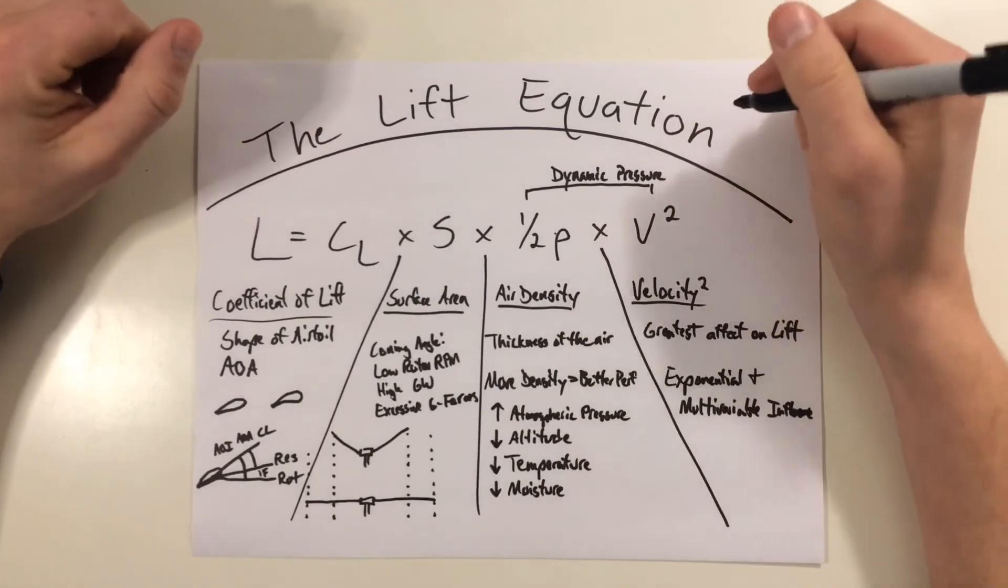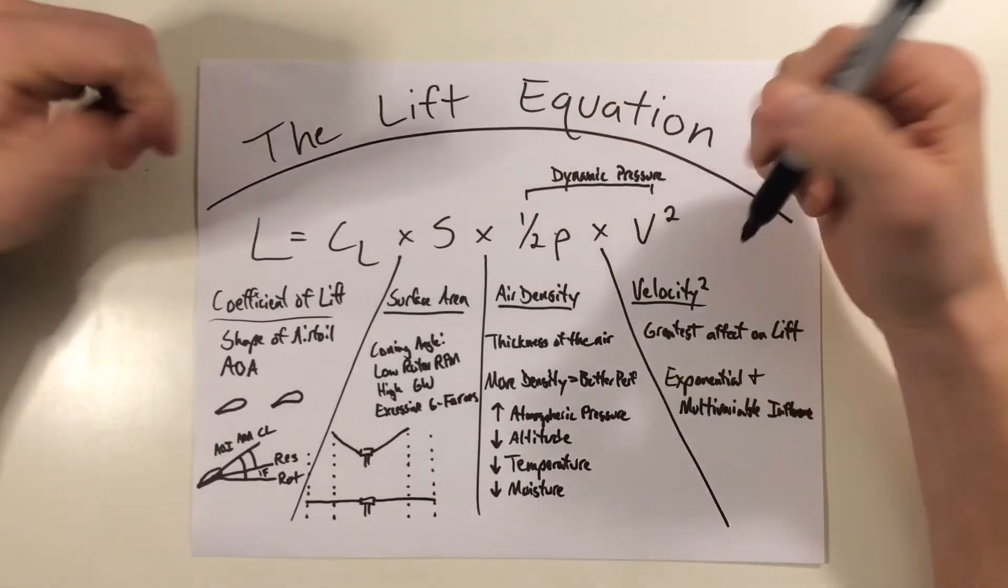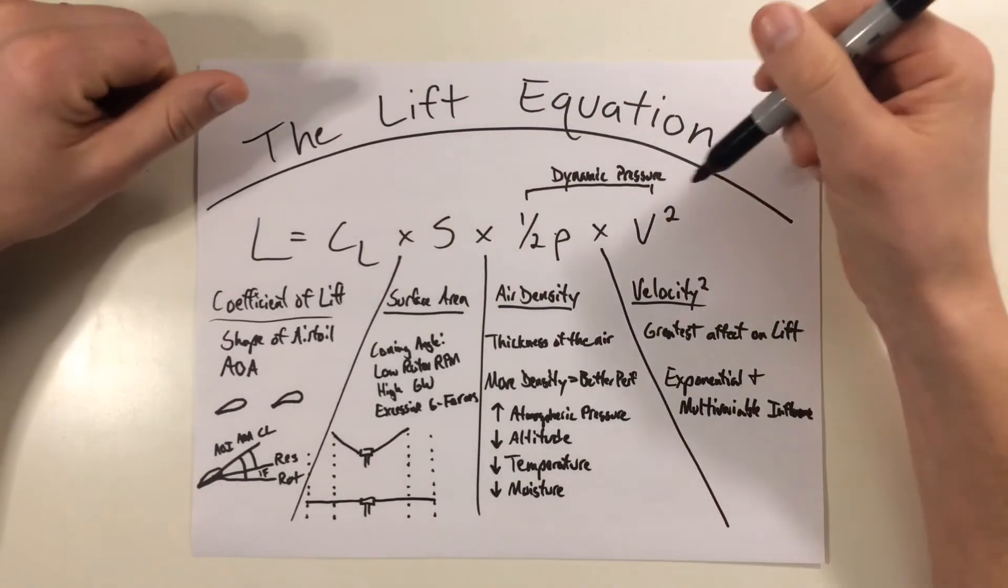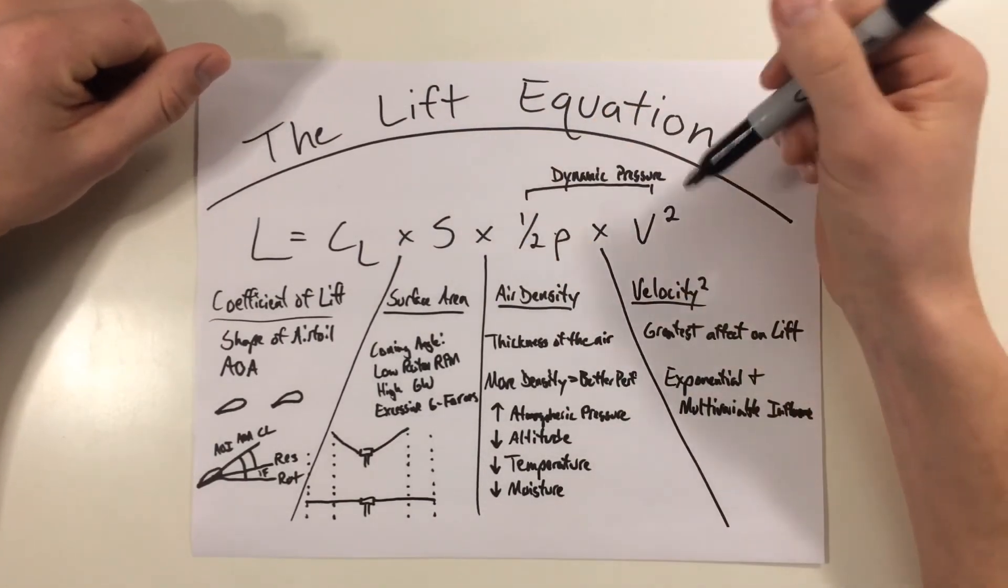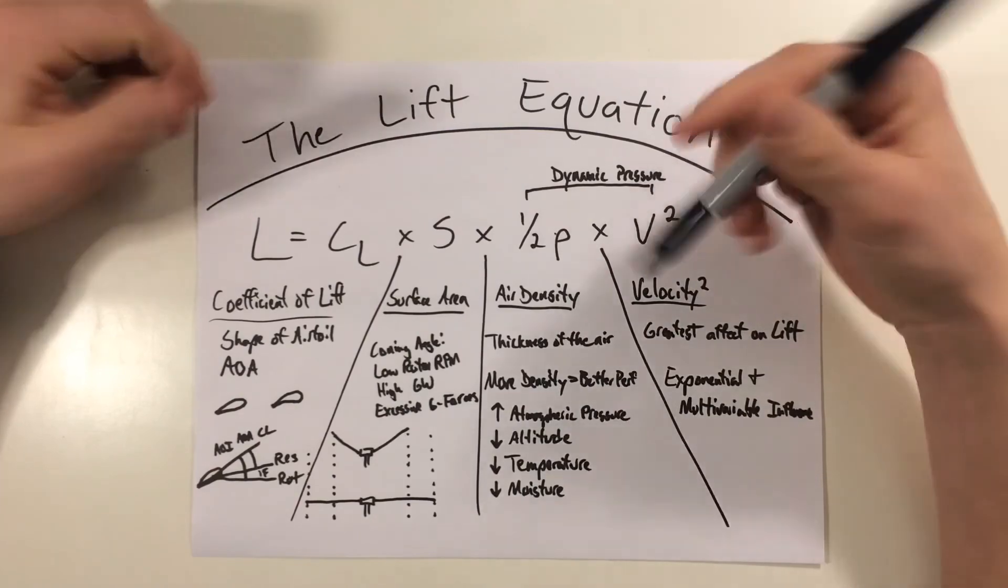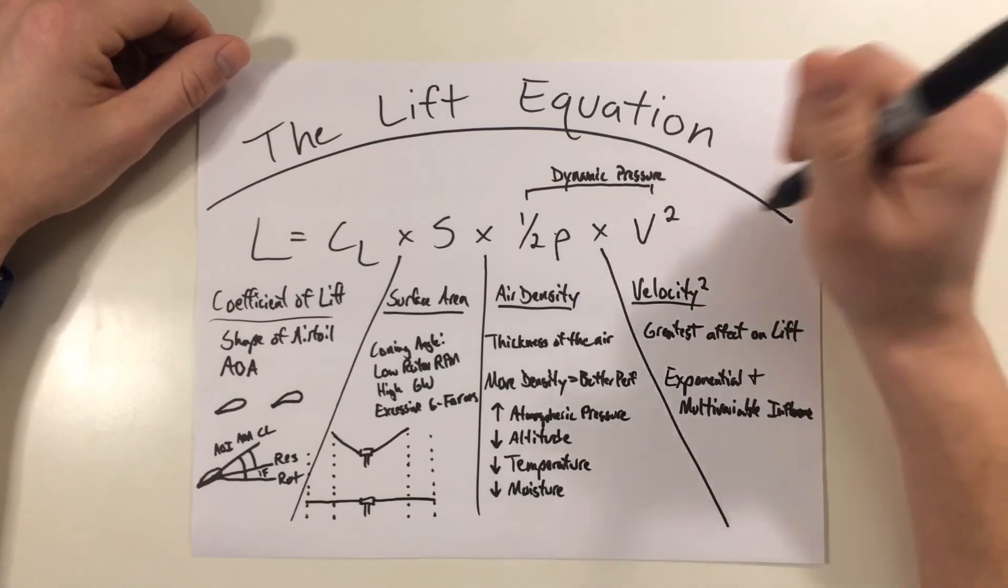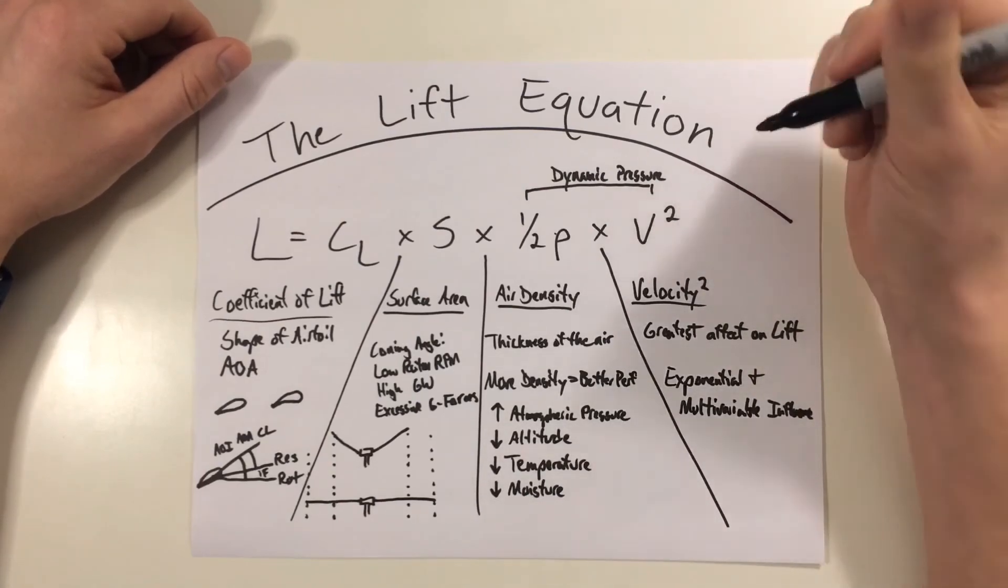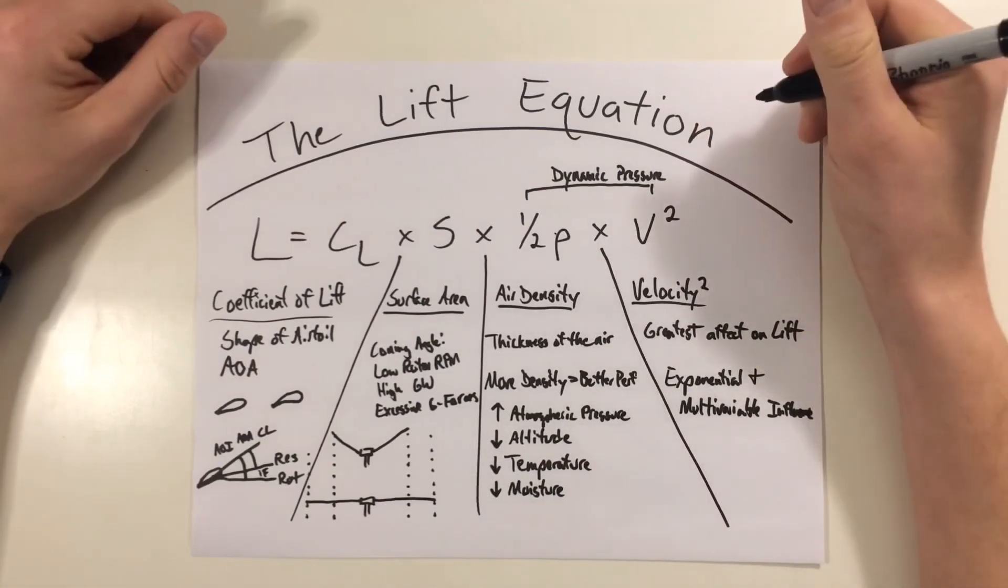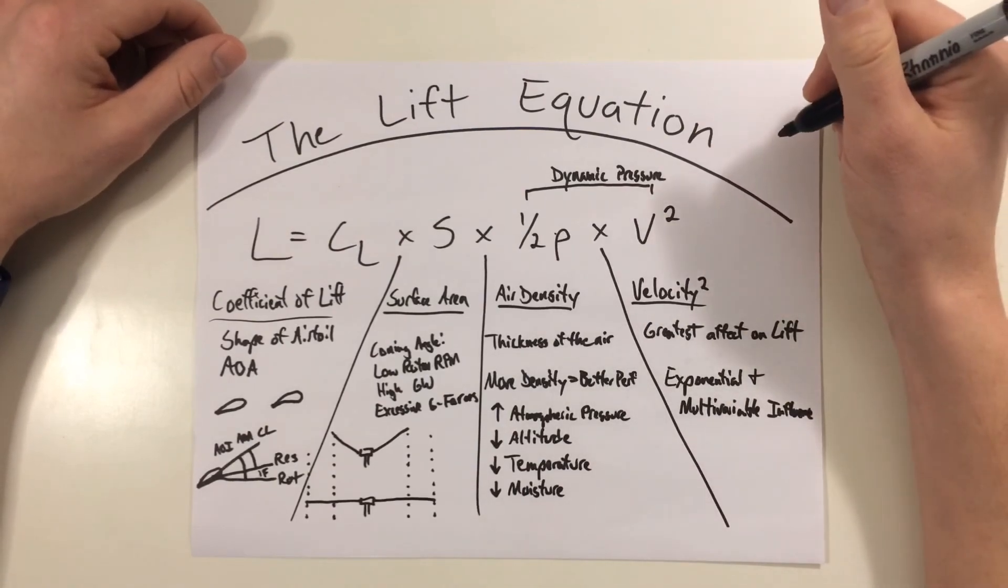All right, so the biggest takeaways from this is that each variable in the lift equation, if it increases, will increase lift. If it decreases, it will decrease lift. But by far, velocity squared is going to have the greatest impact. All right, so that wraps up the lift equation. Don't forget to hit like and subscribe below. If you have any questions or comments, leave those as well. But thanks for watching, and as always, I'm Jacob, and this has been Helicopter Lessons in 10 Minutes or Less.